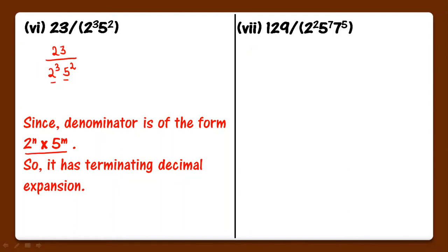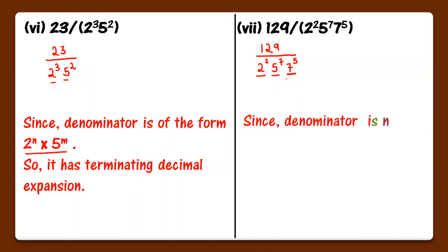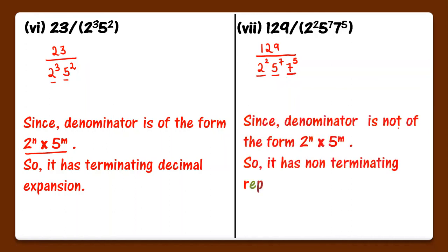Now 7th part: 129 upon 2 squared into 5 raised to the power m into 7 raised to the power 5. Here we can see that this denominator is not of the form 2 raised to the power n into 5 raised to the power m, because it also contains 7 raised to the power 5. So it has non-terminating repeating decimal expansion.